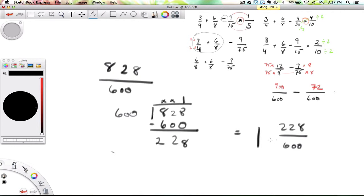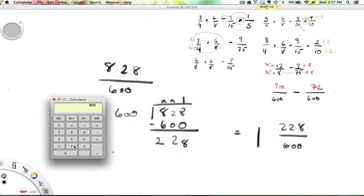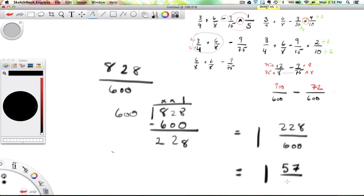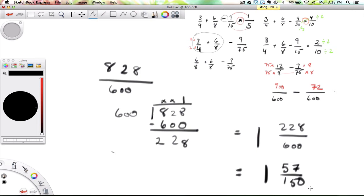Now 228 is even, 600 is even, so we can start reducing by at least 2. 228 divided by 2 is 114. Divided by 2 again, that's 57. So if I divide the top by 4, I get 57. 600 divided by 4, that's 150. So if I reduce by 4, I get 1 and 57 over 150. I don't think I can reduce this further. And so the final answer to this BEDMAS problem is 1 and 57 over 150.